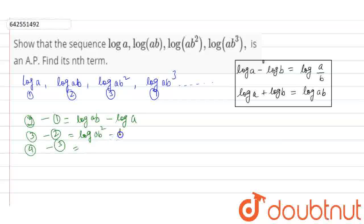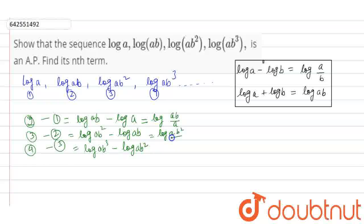So log(ab) minus log a, log(ab²) minus log(ab), and log(ab³) minus log(ab²). According to the formula, this will be log(ab/a) which equals log b. Similarly, log(ab²/ab) equals log b, and log(ab³/ab²) equals log b.